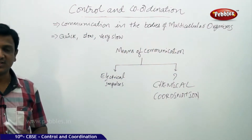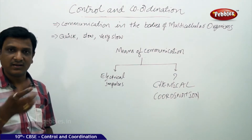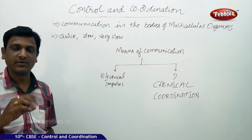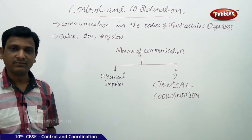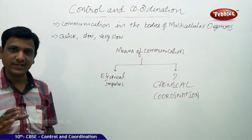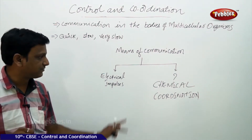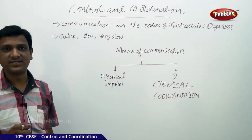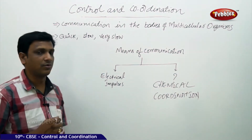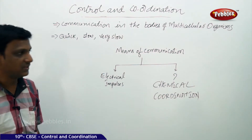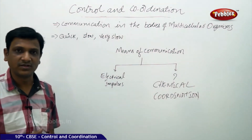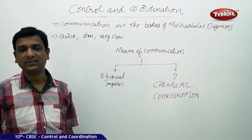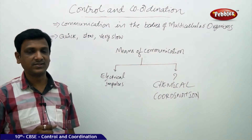Certain chemicals are produced in the bodies of plants and animals. These chemicals are transferred from one part to another along with other transported materials like water and minerals, carried by the body's transport system. Cells that have specific receptors for these chemicals receive them, and the information is communicated to that cell. This is called chemical coordination, observed in both plants and animals. Plant growth is totally controlled by these chemical messengers.